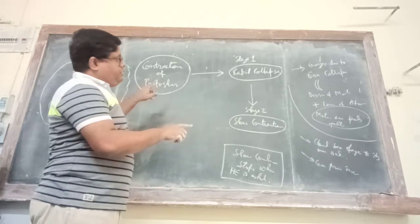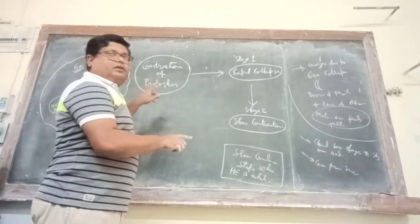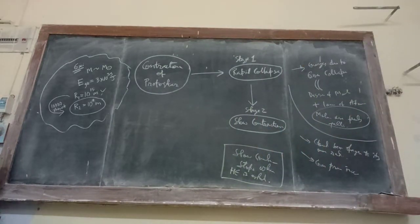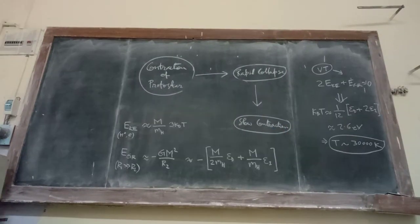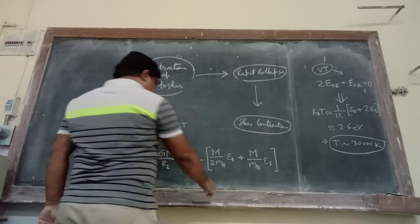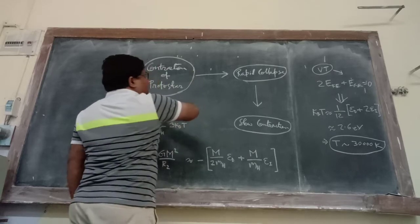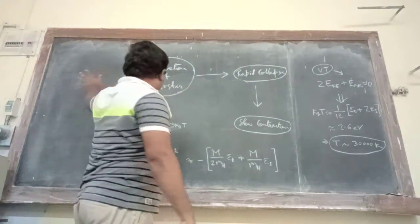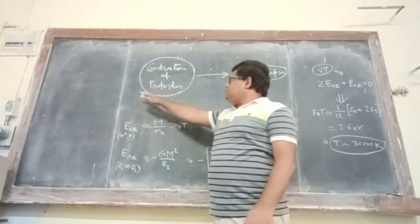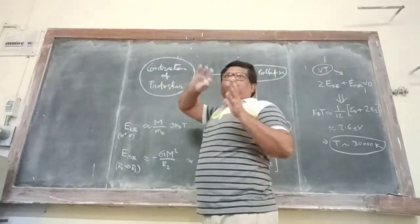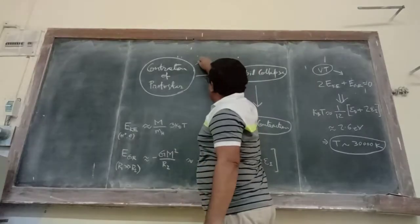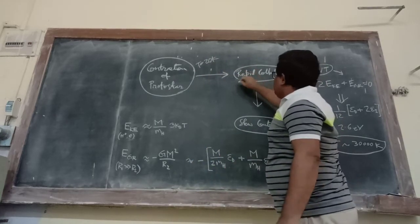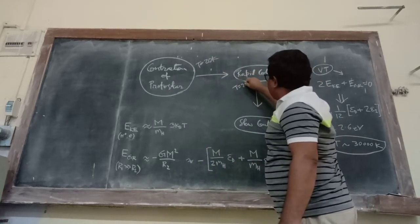If you consider the example I just showed: when we started the contraction, the temperature was T = 20 Kelvin. In the rapid collapse stage, temperature remains the same — T = 20 Kelvin. But as I told you, slowly the slow contraction starts, and eventually during this phase the temperature will keep on increasing.